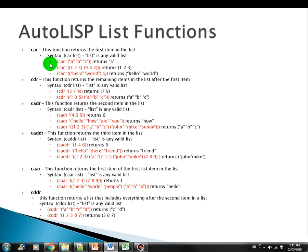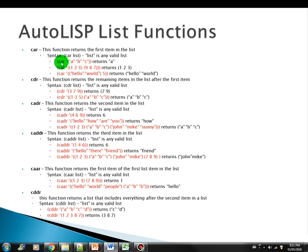Let's start with the car function. This function returns the first item in the list. The syntax is very straightforward — we have car and then our list, which is any valid list. So for example, we have a list of characters A, B, C, and we issue the car function. It just returns A. It's the first item in the list.